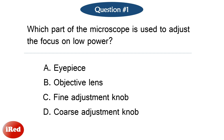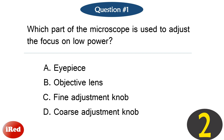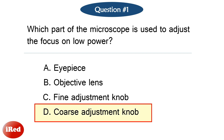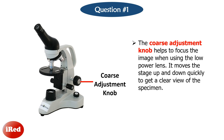Question number 1: Which part of the microscope is used to adjust the focus on low power? The correct answer is letter D, coarse adjustment knob. The coarse adjustment knob helps to focus the image when using the low power lens. It moves the stage up and down quickly to get a clear view of the specimen.